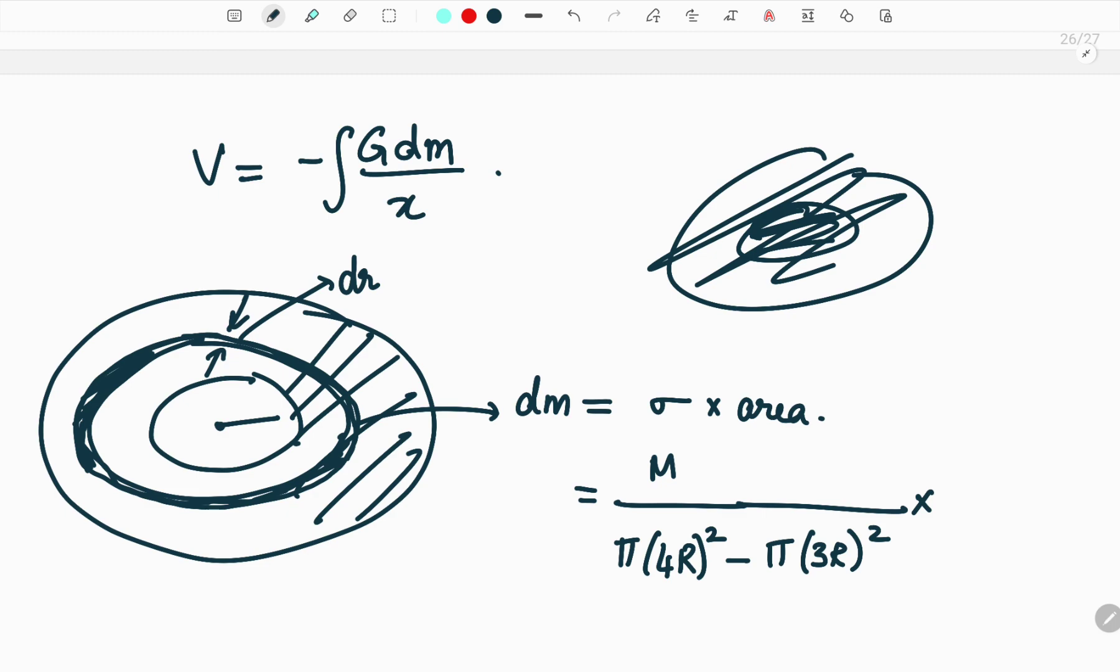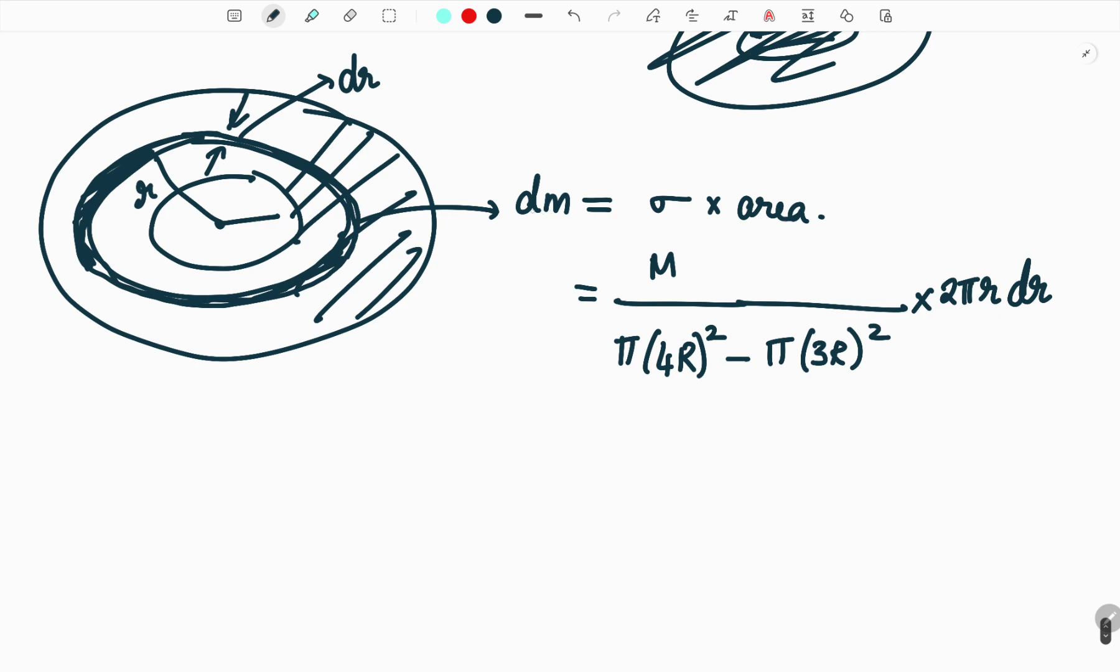So let us imagine this is r radius. So that will be 2πr into the thickness of dr. So this will be dm.